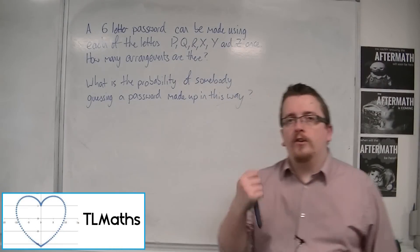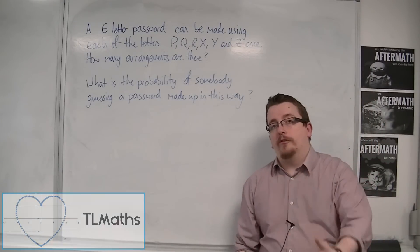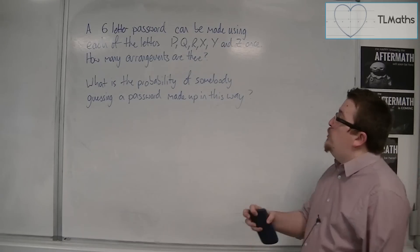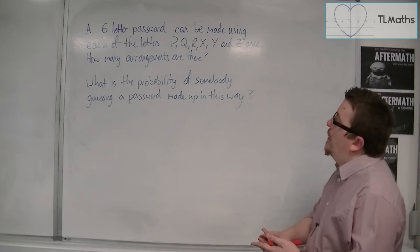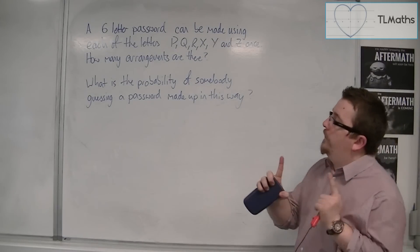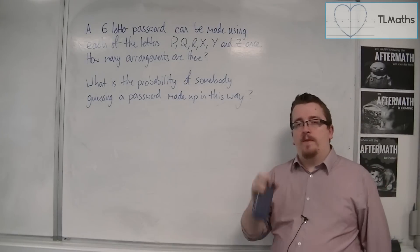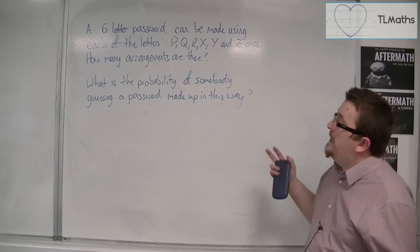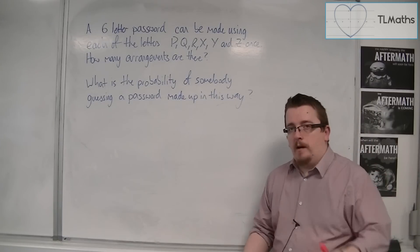In this video you're going to see where factorials come into this. A six-letter password can be made using each of the letters P, Q, R, X, Y, and Z once. How many arrangements are there? And what is the probability of somebody guessing a password made up in this way?